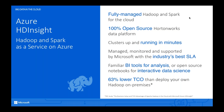HDInsight is the most reliable open-source analytics platform with industry-leading three-nines SLA. It's the only cloud offering that gives you three nines not only for the VMs that make up your cluster but for the overall cluster platform as well. You get three-nine reliability for Spark, Hive, HBase, Storm, Kafka, and Microsoft R Server — a fully managed cluster service.